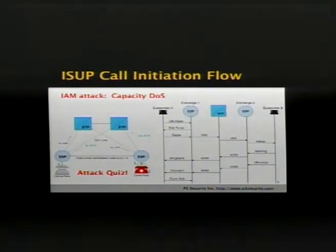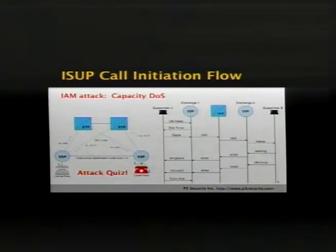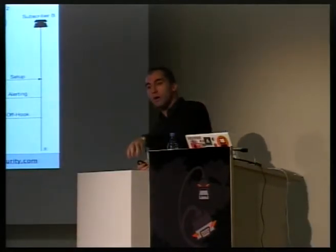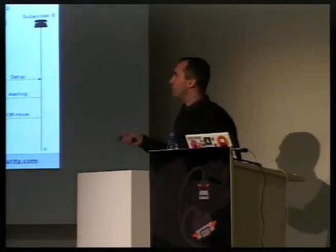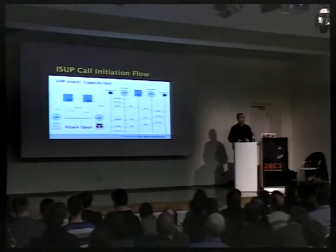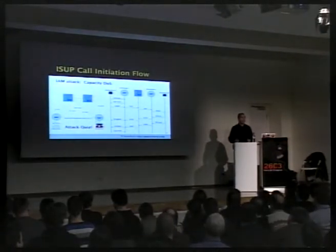If you inject 32,000 IAM packets — and that's a very small number — you're going to provision 32,000 communication trunks, voice-carrying signal lines, way too many between the two switches because no one expects 32,000 people calling from one location to another. In practice, those two switches become unavailable. If you do this repeatedly, you cause a capacity denial of service on the whole network for the duration of the timeout of the state machine.